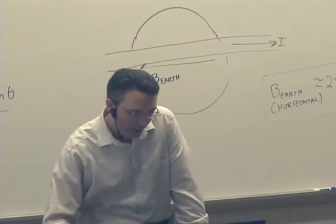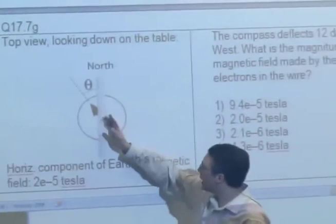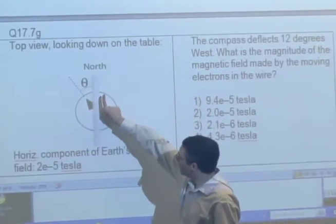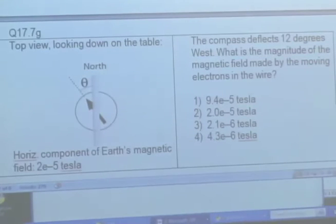So let's skip ahead here. Let's say, so we've rearranged the same sort of situation. You have a wire on top of a compass and you're running a current through the wire. And without the current, the compass needle would point north. But with the current, it's deflected by an angle, theta, 12 degrees to the west. You know the horizontal component is 2 times 10 to the minus 5 Tesla. What's going to be the magnitude of the magnetic field made by the current, by the moving electrons in the wire? Let's see if you can figure this out.